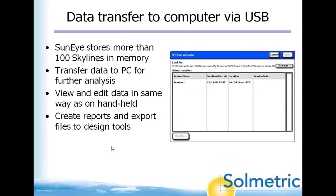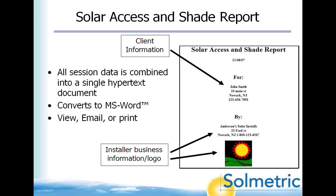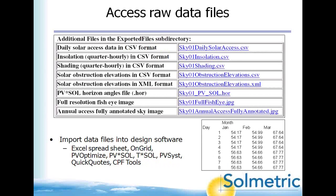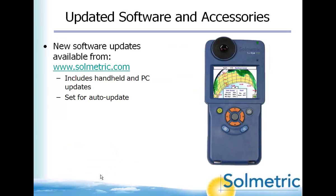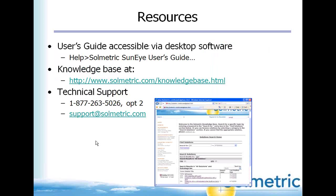The SunEye stores more than 100 skylines in memory depending on resolution, which you then transfer to the computer. You can generate, email, and print reports, or put them into MS Word. Files are available for a number of third-party tools as well. Software updates come out periodically and can be downloaded from our website, updating both the device firmware and the PC software.